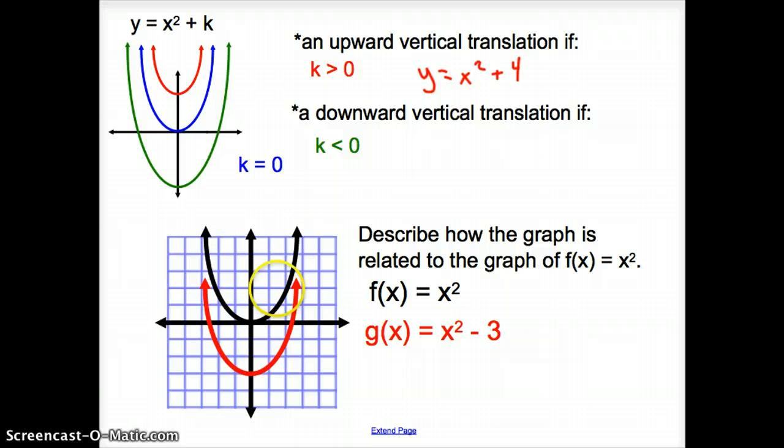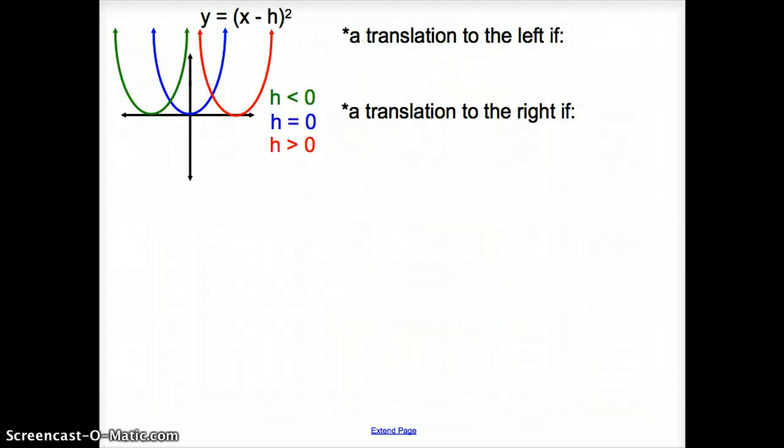Well, what happened? My black parabola is what they call a parent function where it goes through the origin. What did my minus 3 do to that parabola? It moved it down, correct? It translated the graph down 3 units.